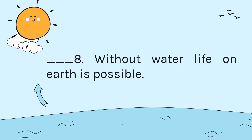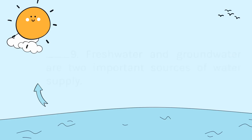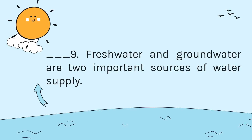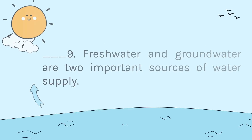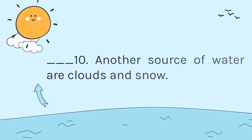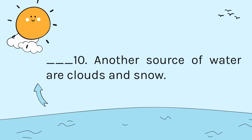Number 8. Without water, life on Earth is possible. Number 9: Fresh water and groundwater are two important sources of water supply. Number 10: Another source of water are clouds and snow.